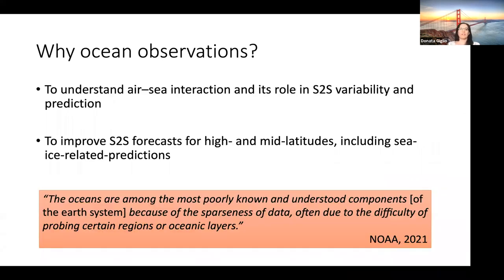To summarize, we really need ocean observations to understand air-sea interactions and the role of air-sea interaction in S2S variability and prediction. We need ocean observations to improve S2S forecasts in high and mid-latitudes, including sea ice predictions. The NOAA report highlights how the ocean is among the most poorly known and understood components of the Earth system, largely due to the sparseness of data and the difficulty of making measurements in certain regions or certain oceanic layers.